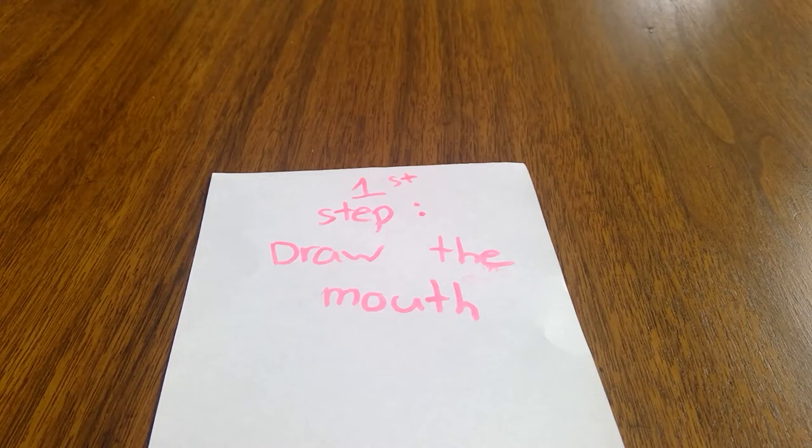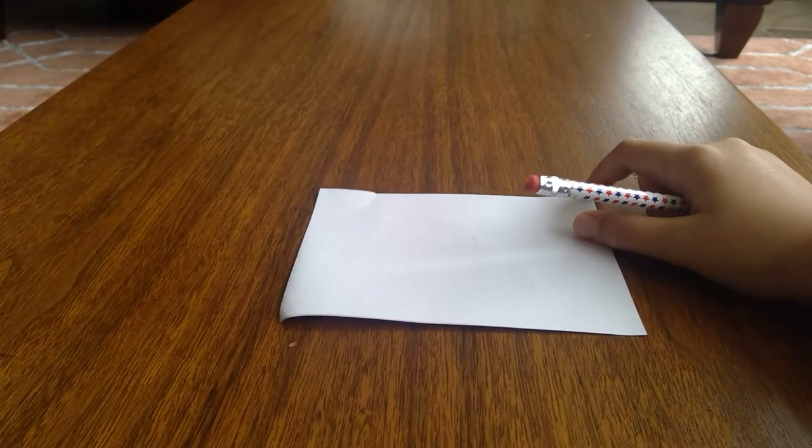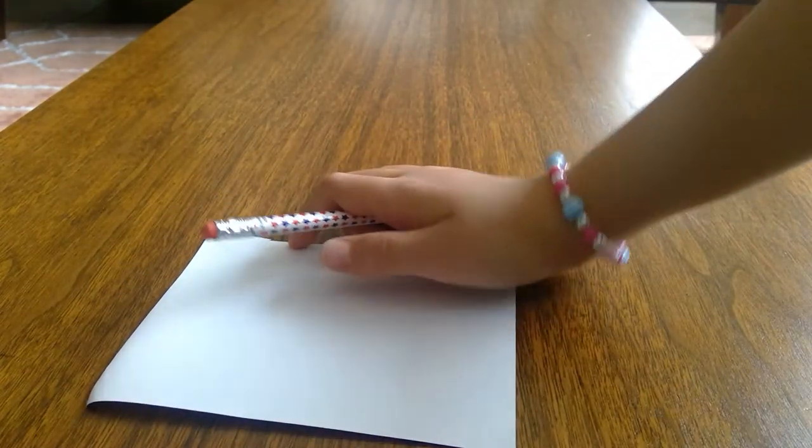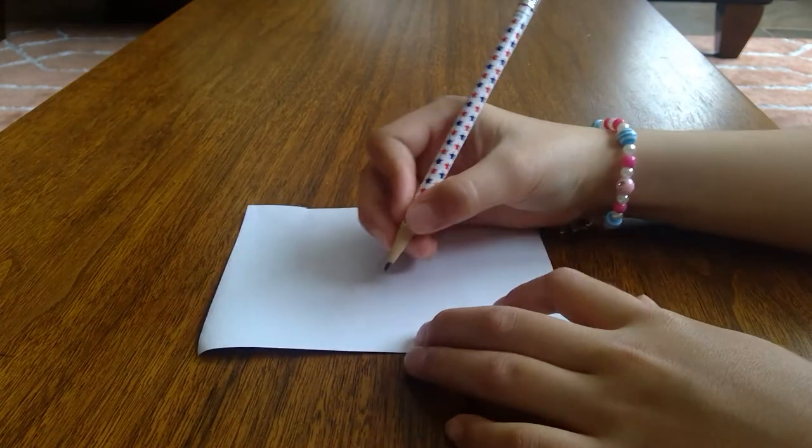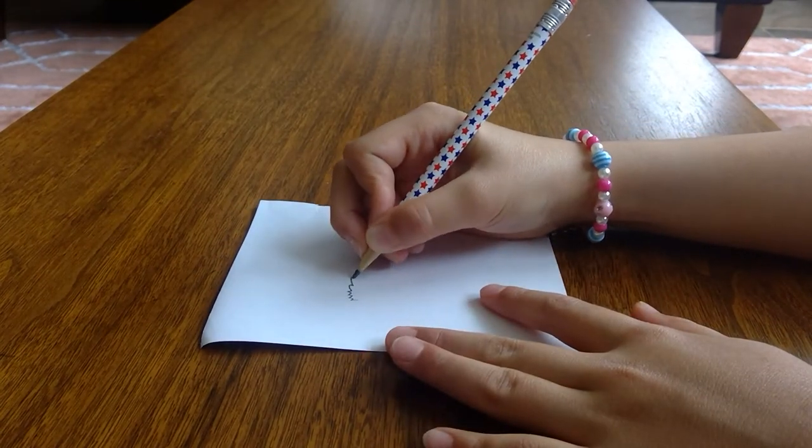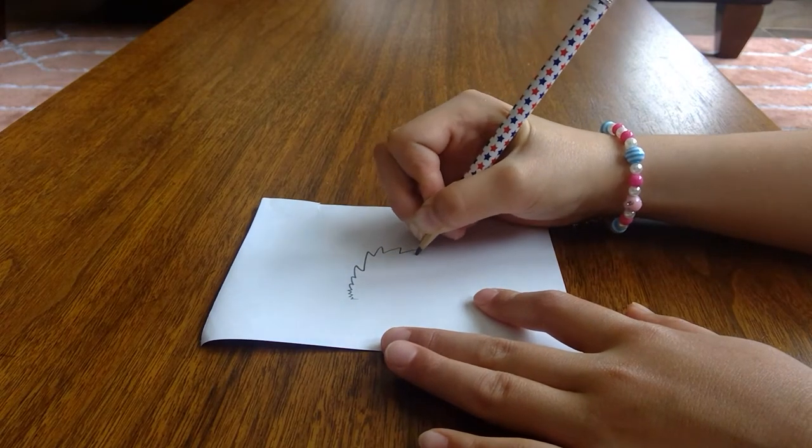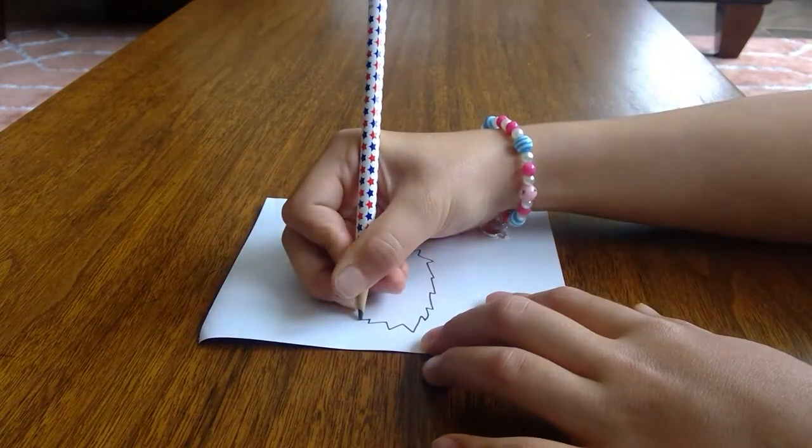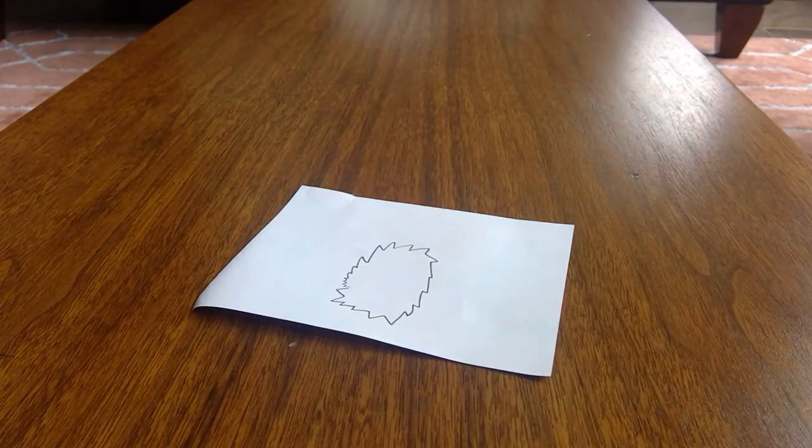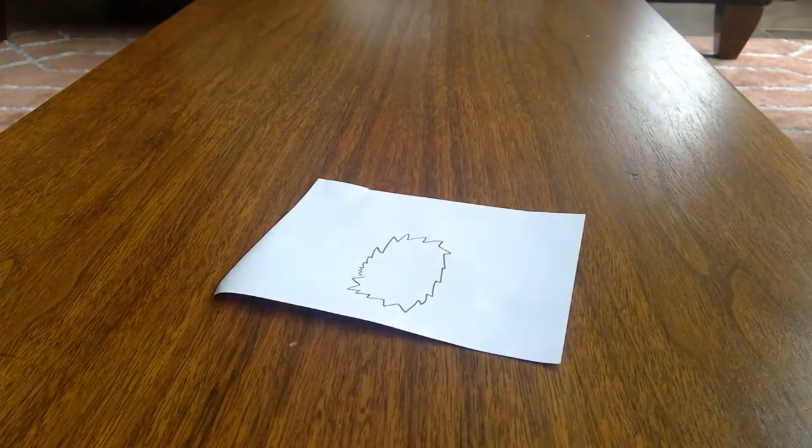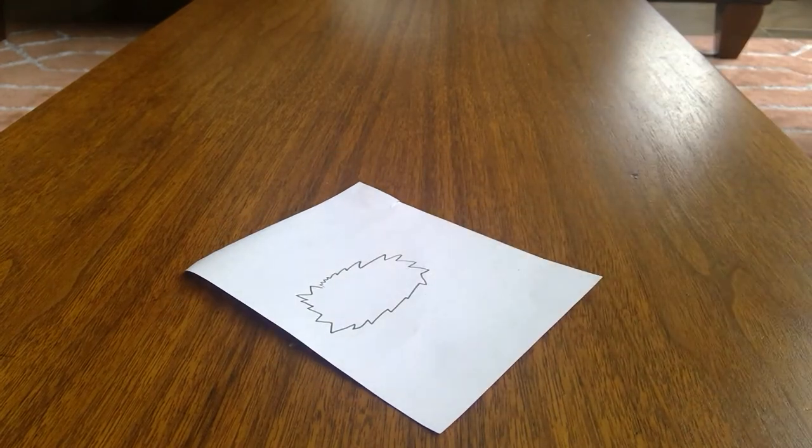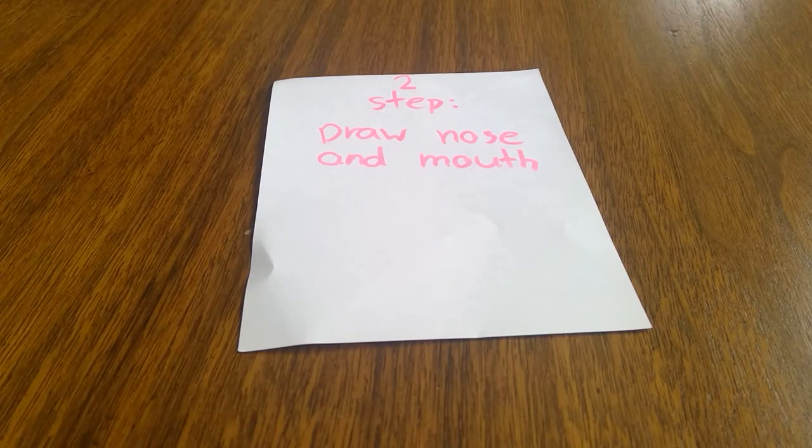Okay, so first you're going to need to draw the muzzle. You just draw some squiggly lines. Squiggles are the best, they're so fun to make. And then, that's how you draw the muzzle, or the mouth, or whatever you call it.